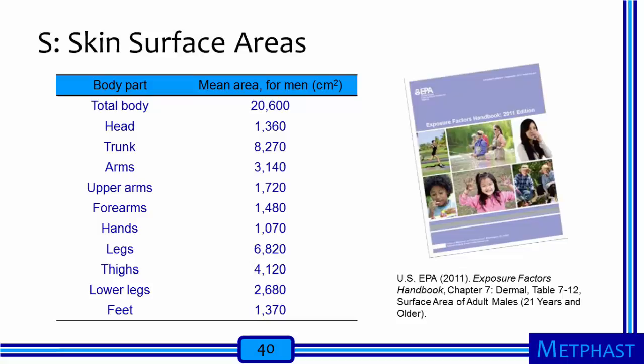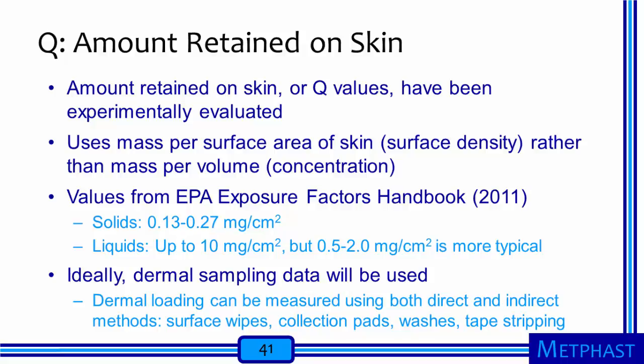Q values — amounts of materials retained on skin — have been experimentally evaluated in units of mass per surface area, or surface density. From the EPA Exposure Factors Handbook, most solids are retained in the range of 0.13 to 0.27 mg/cm², while liquids can be retained at up to 10 mg/cm², although 0.5 to 2 mg/cm² is more typical. Ideally, dermal sampling data will be used. Both direct and indirect methods can be used to sample skin, including surface wipes, collection pads, skin washes, and tape stripping.